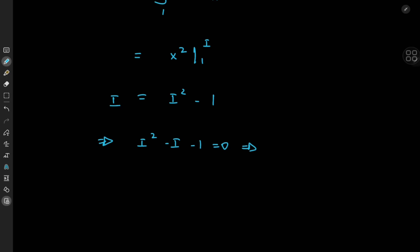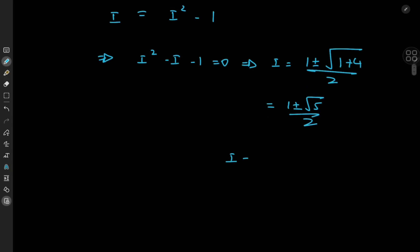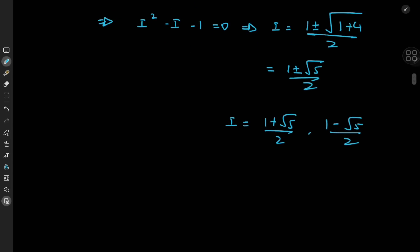We solve this quadratic equation in i using the quadratic formula. So we have 1 plus or minus root of 1 plus 4, divided by 2, giving us 1 plus or minus root 5 over 2. So i could be 1 plus root 5 over 2 or 1 minus root 5 over 2. The first of these values is of course the golden ratio phi, and the other is 1 minus phi — we might as well call it a conjugate of the golden ratio, so we'll call it phi bar.